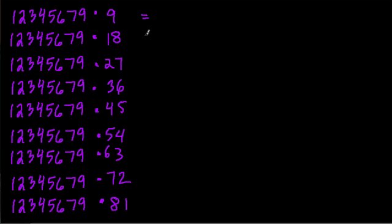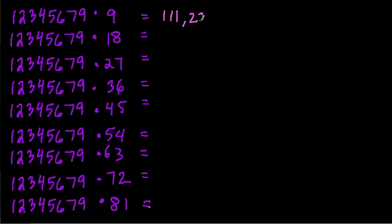So what happens when we do this? Well, you might want to grab a calculator or do this by hand — I would prefer a calculator myself — to multiply each of these products. Or we can just take a look together. When we multiply 12,345,679 times 9, what do we get? We get all 1s. So the first product of 9 times this number gives us all 1s.